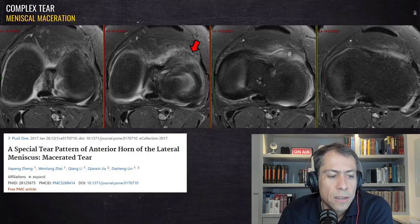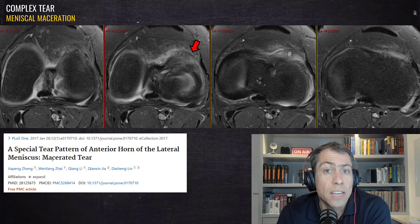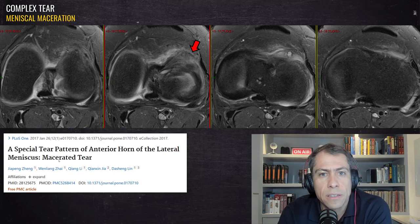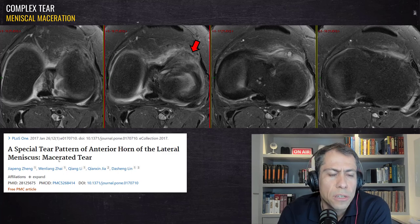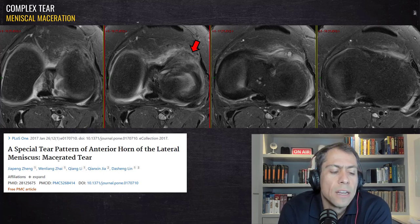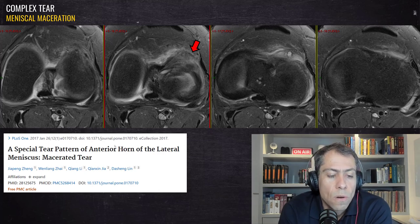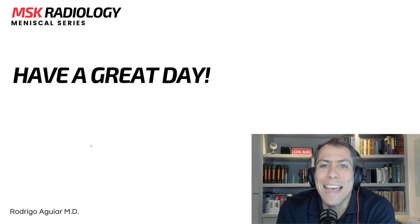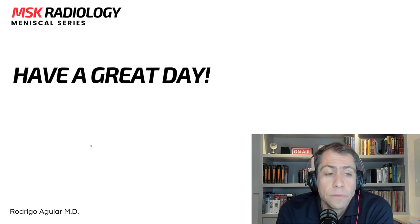There is a paper where some researchers found a specific type of meniscal tear they call a macerated tear that occurs in the anterior horn of the lateral meniscus. They studied 60 patients and 42 percent had this type of macerated tear. It's a free article — if you want to know more, search for it on PubMed. That's it for this video. Thank you for your attention and until next time.